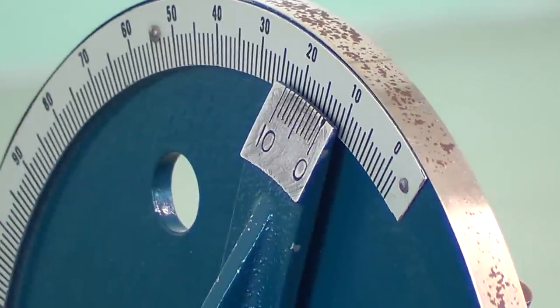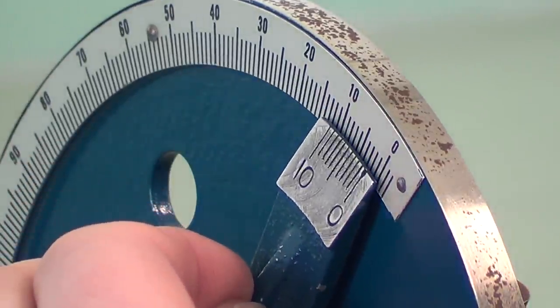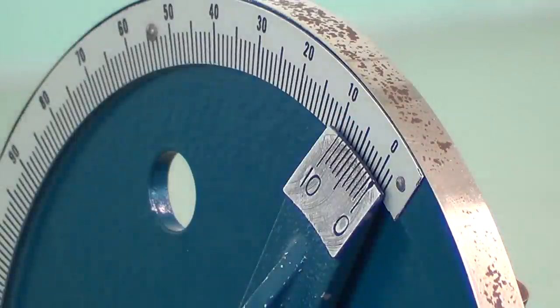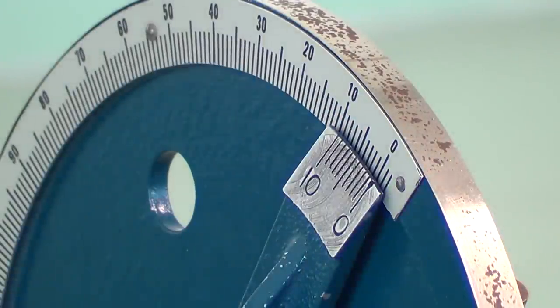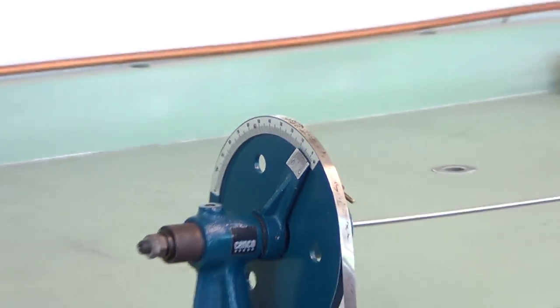This caliper arm here moves back and forth and we'll want to position it so that the zeros on the top and bottom dials line up. Once we have zeroed out with our mass hanger in place...